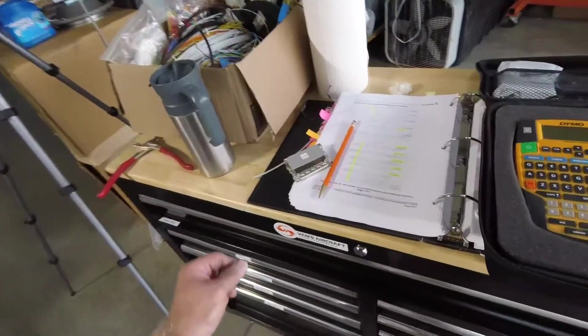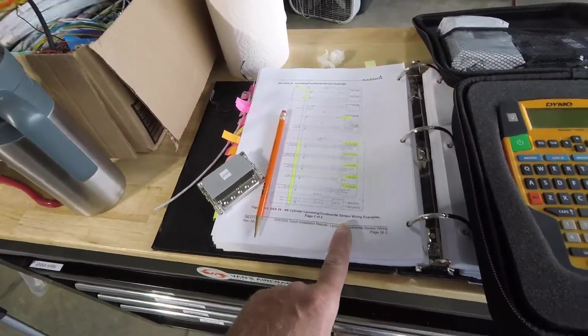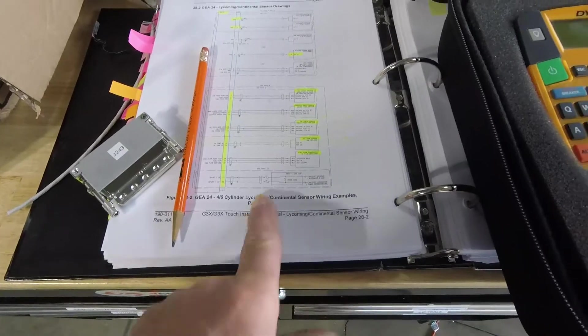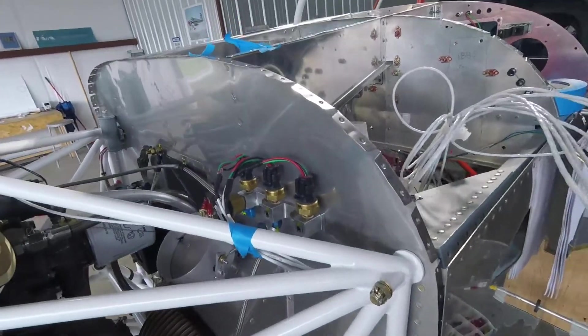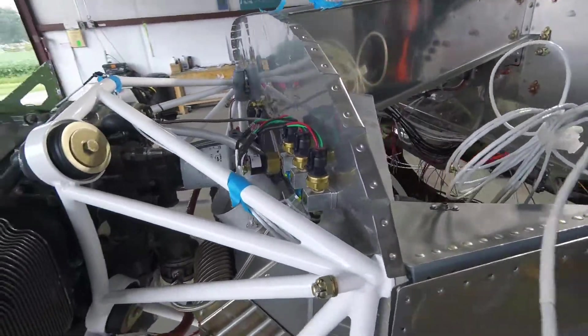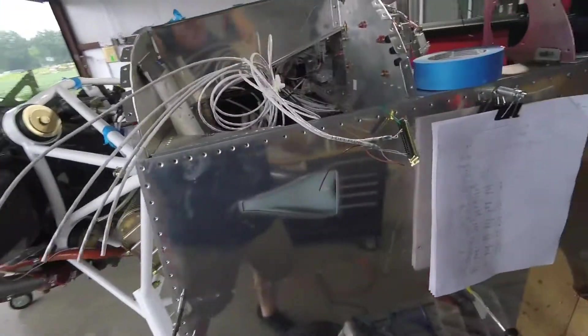I've got the back shell right here, the Garmin installation manual, wires I'm going to connect to all the sensors, fuel pressure and manifold pressure. I got them all hooked up firewall forward. Now I just have to get things wired up to the D-Sub connector.